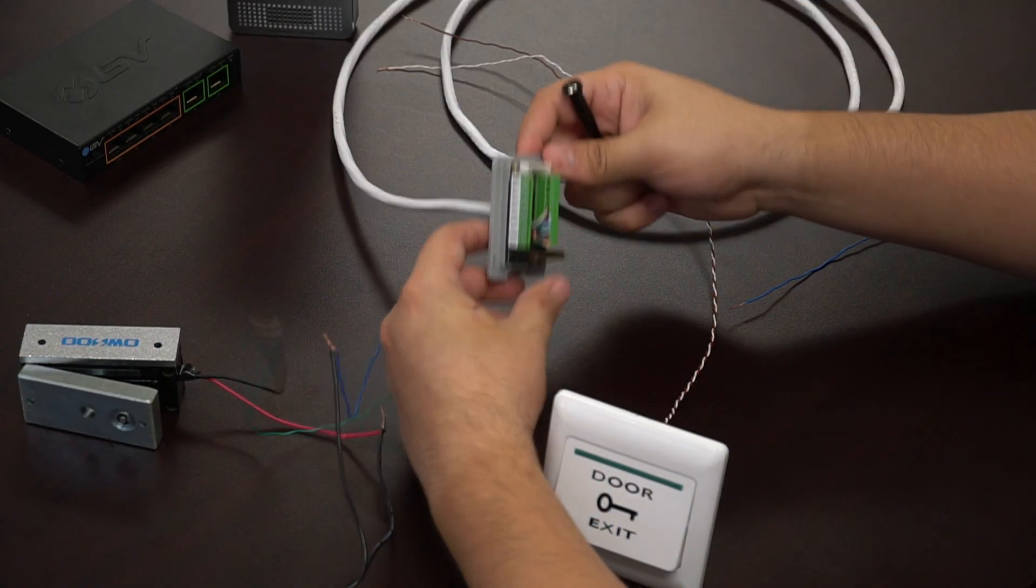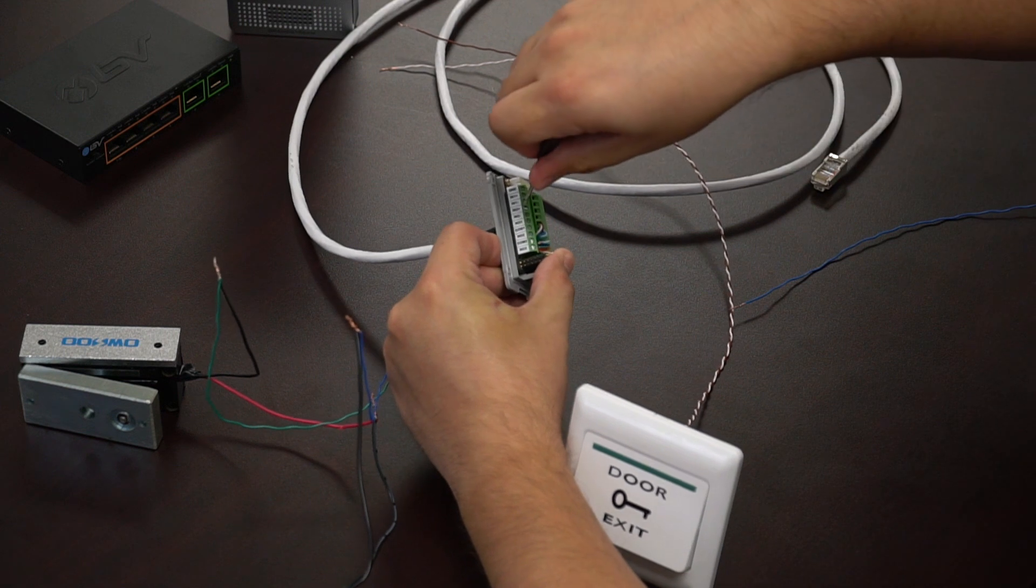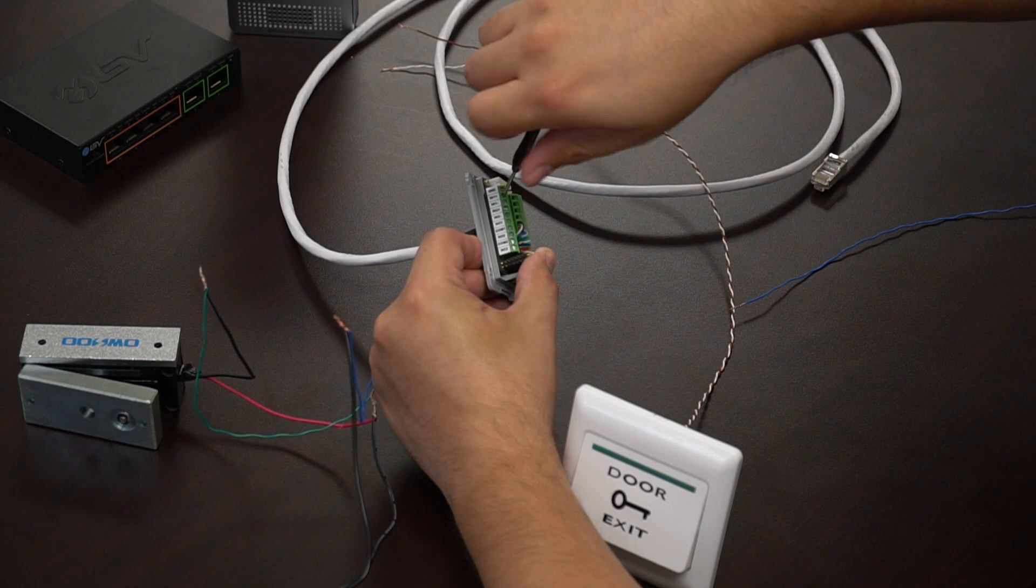Next we're going to be loosening up all the other contacts that we will be using: N1 plus, N1 negative, N12 negative, and N2 plus.